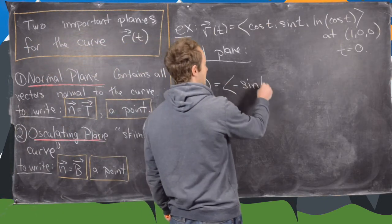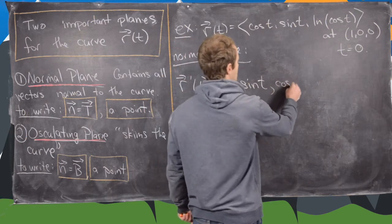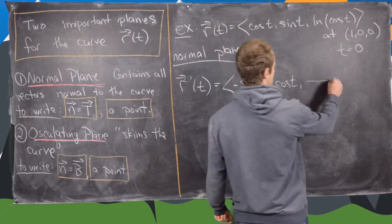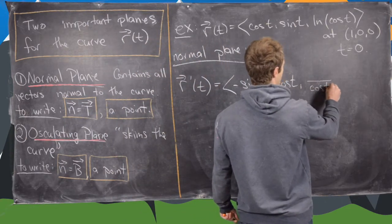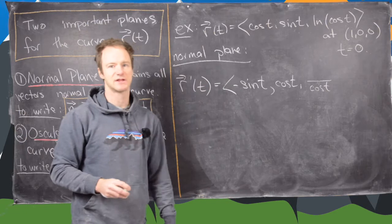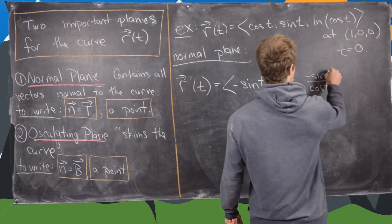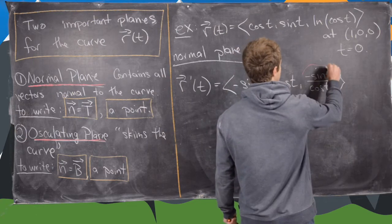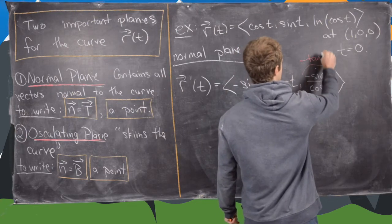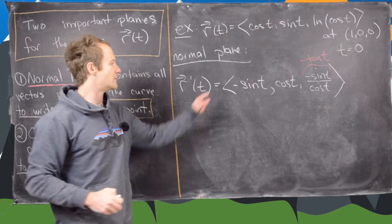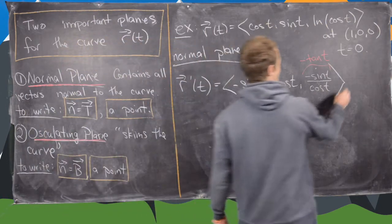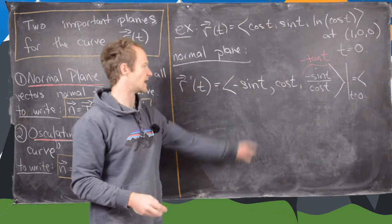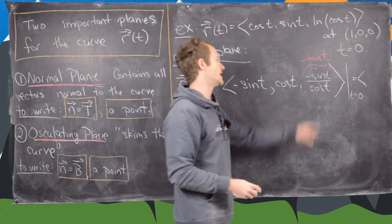Taking the derivative gives us minus sine t, cosine t. For the third component we use the chain rule: the derivative of natural log is 1 over, so we have 1 over cosine t times the derivative of cosine t, which is negative sine t. So this term simplifies to minus tangent of t. Evaluating at t equals 0, we get 0, 1, 0.